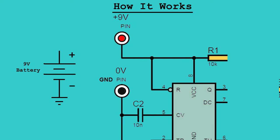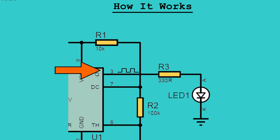How it works. When you power the circuit, the NE555 IC operates in astable mode, continuously oscillating and generating a square wave at pin 3.